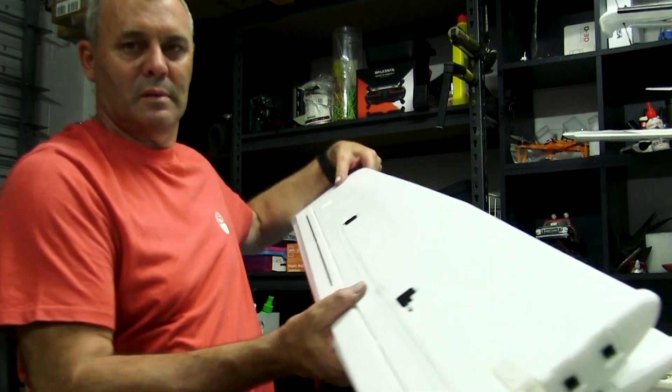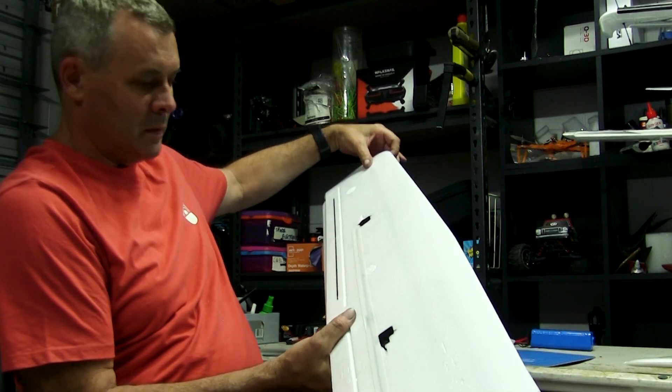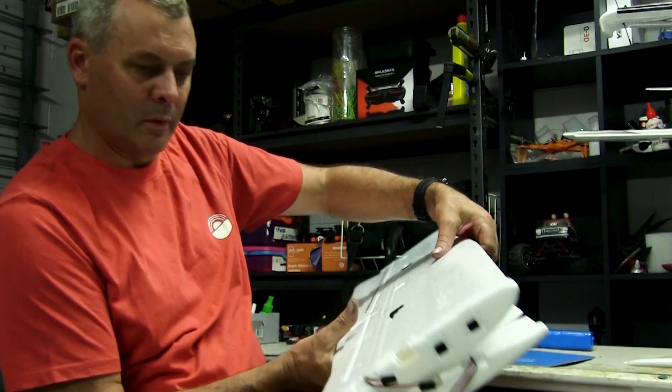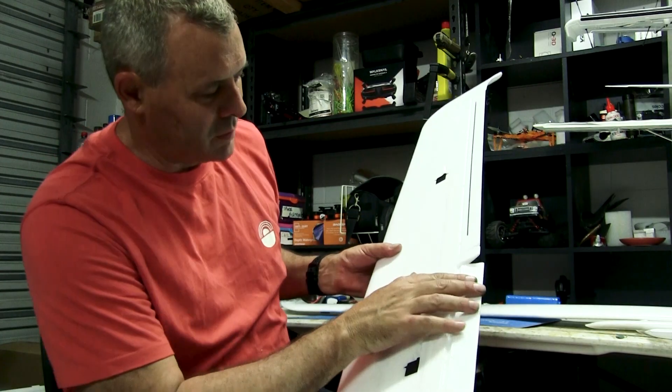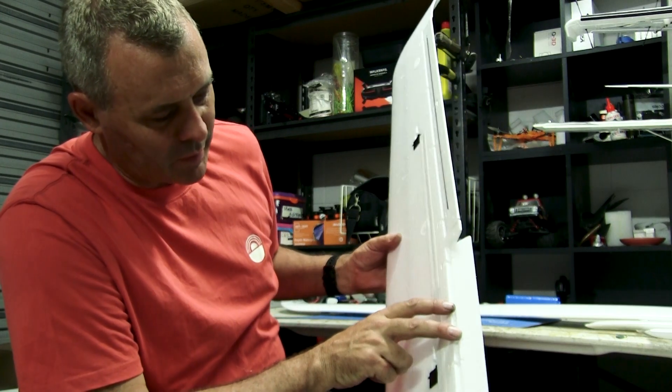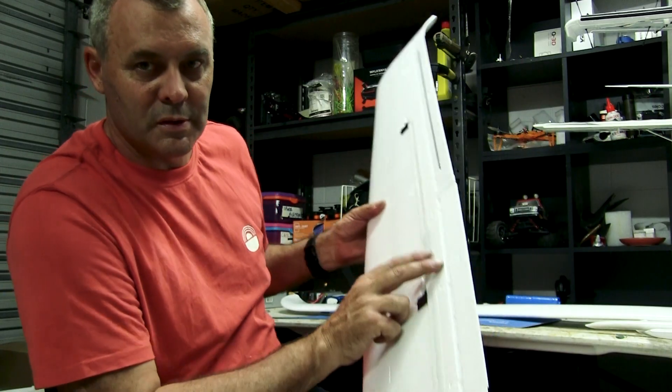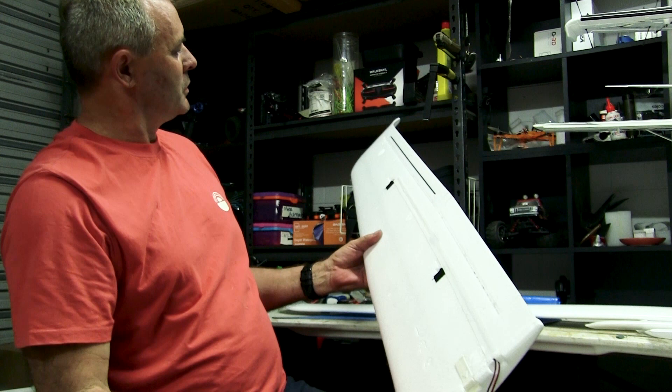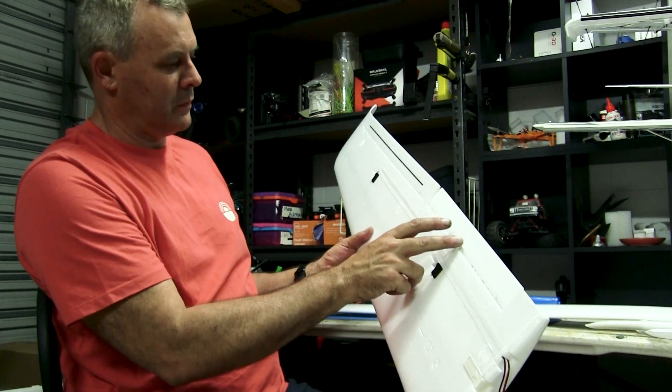There's your wings. These are big wings, I must say. Got two servos, one for the flaps, one for the aileron, and they're all hinged. So everything's got its own little hinges. Three hinges in the aileron or flap. Two spars by the look of it.